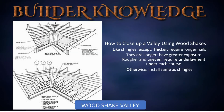Now let's see how to close up a valley using wood shakes. Shakes are similar to shingles with a few differences: they are thicker, therefore requiring longer nails; they are longer, therefore having a greater exposure; and they are rougher and uneven, therefore requiring underlayment placed under each course and extended down to the bottom edge of the next row as the shakes are installed. Other than these noted differences, shakes are installed the same as shingles.